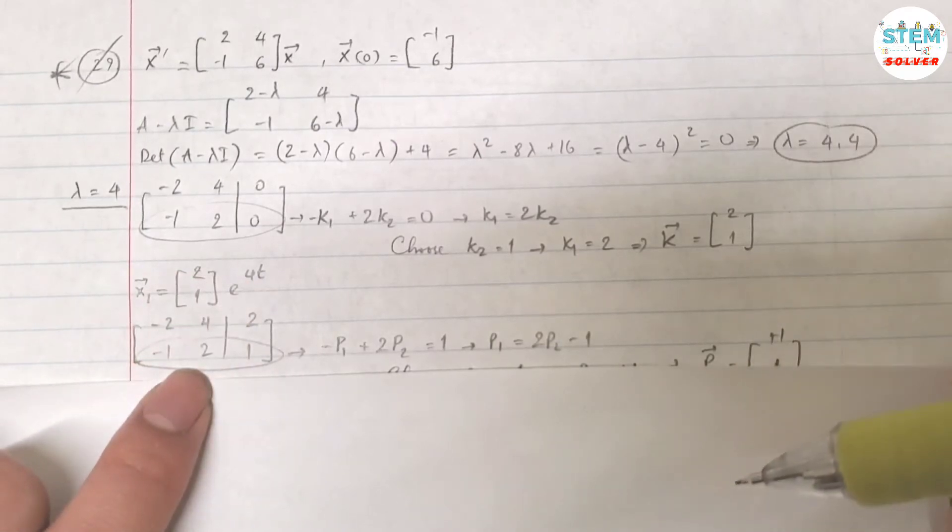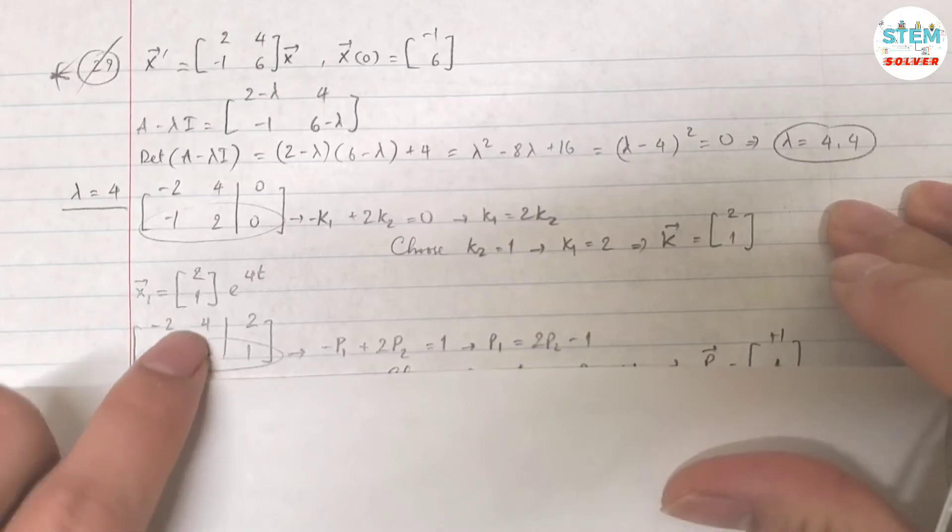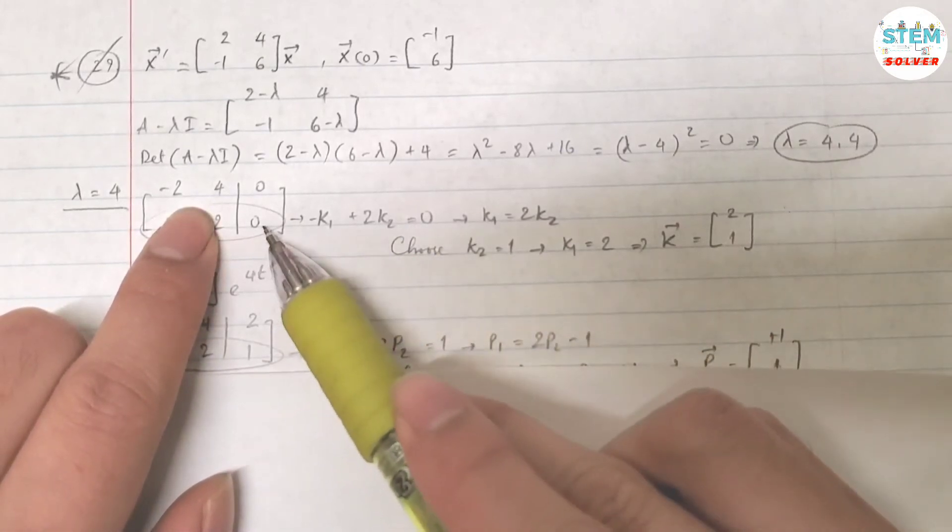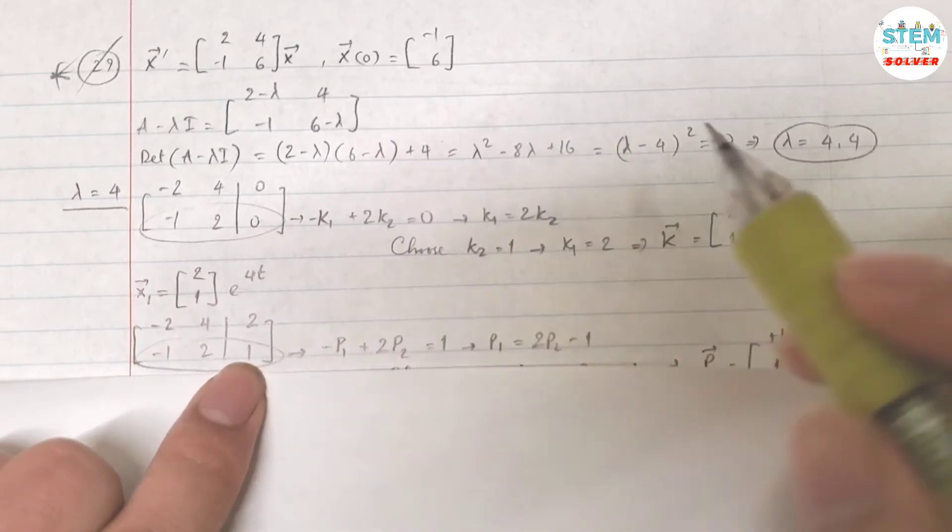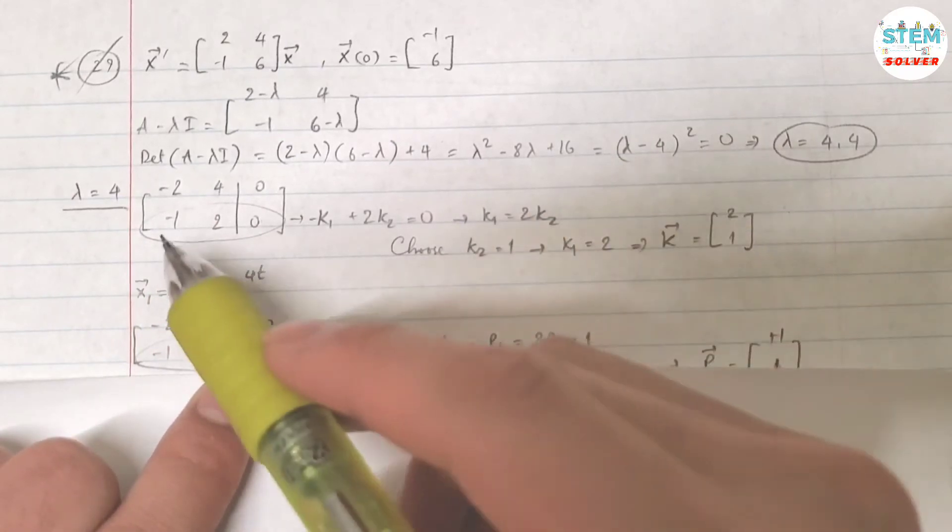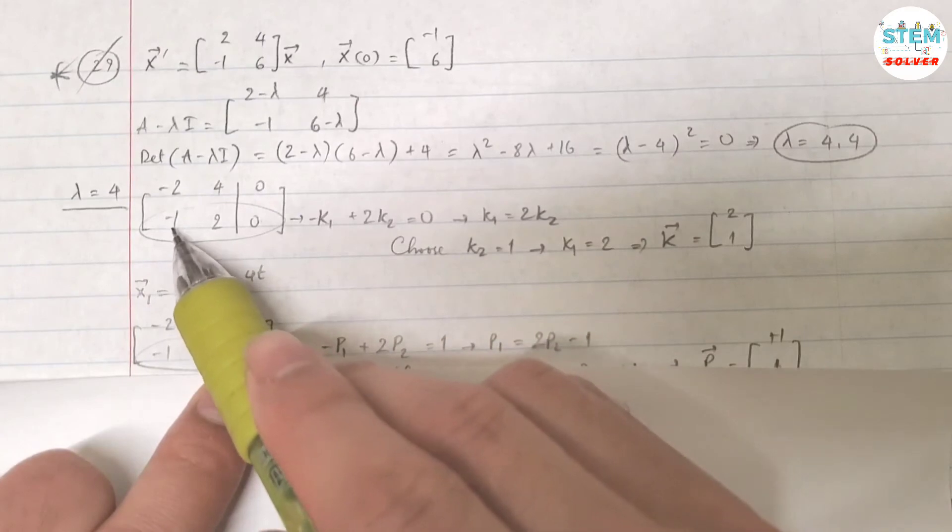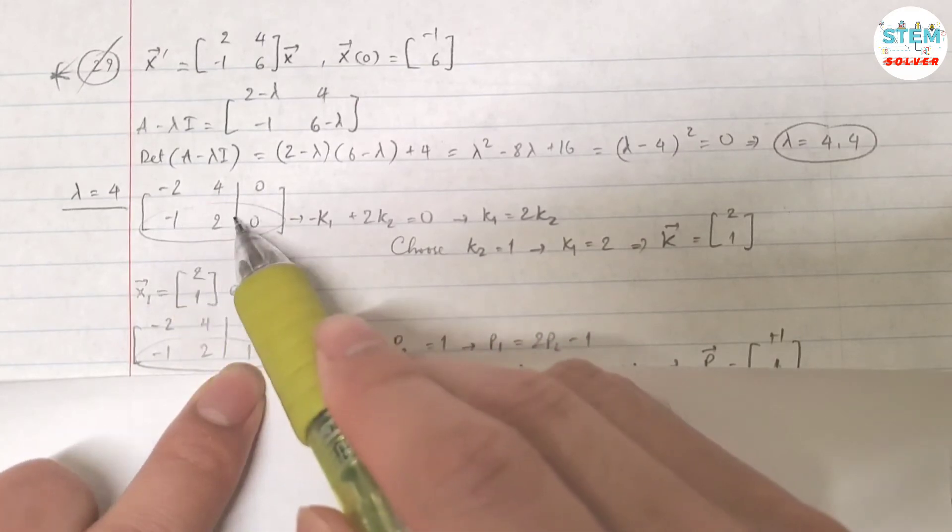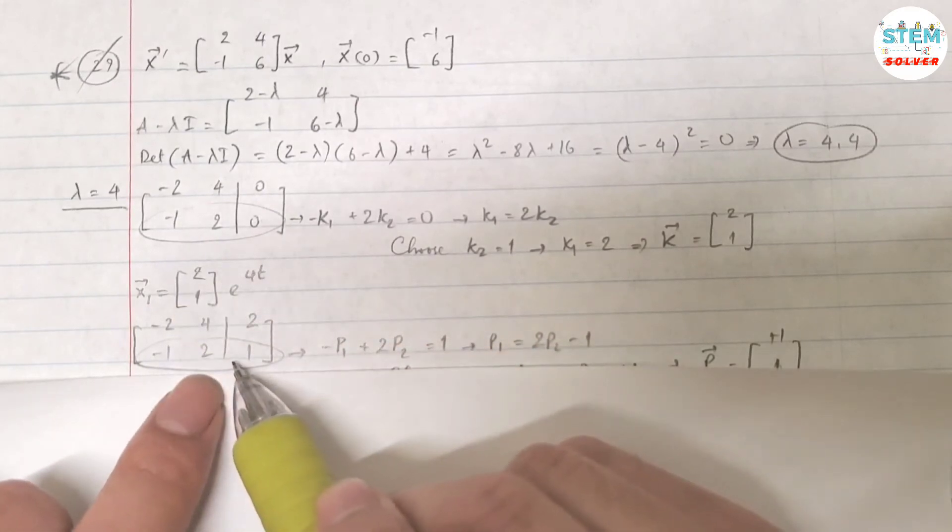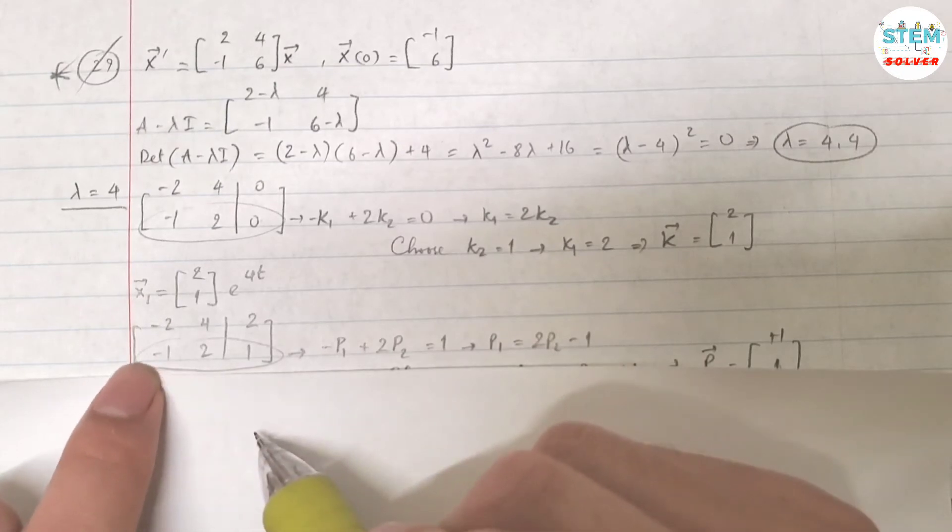Now, to find the second vector, you are going to use this matrix. But instead of augmenting with 0, you are going to augment it with [2, 1], the vector you just found. And for this matrix, you use variable k1, k2. Now for the new matrix, you are going to use different variables which I call p1, p2.